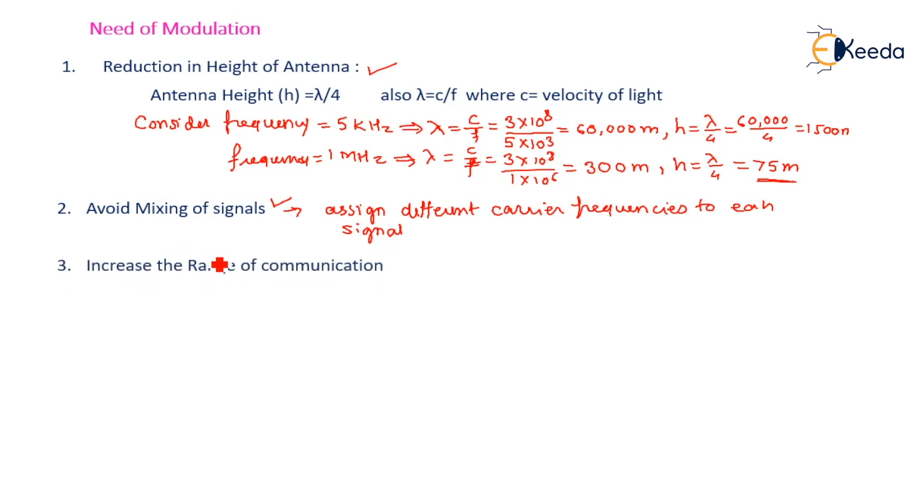Third, increase the range of communication. Frequency of baseband is very low - original information signal has lower frequency. Low frequency signal cannot be transmitted over a longer distance because signal amplitude goes on decreasing after travelling a certain distance. So this low frequency signal cannot go higher distance. Hence if we modulate, they can travel a longer distance without any attenuation.